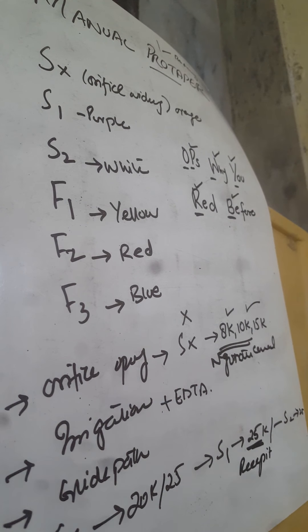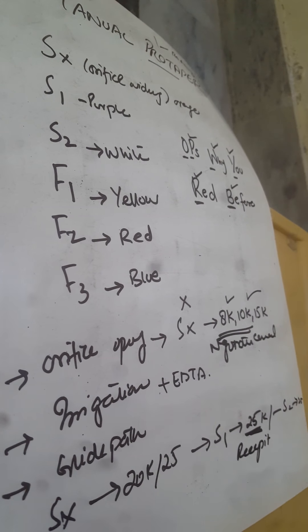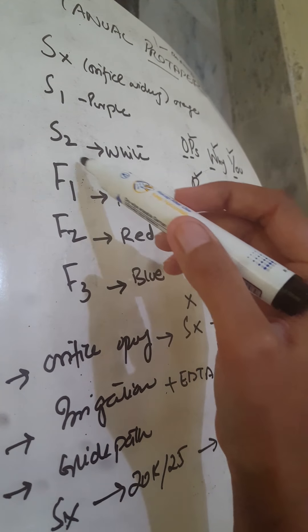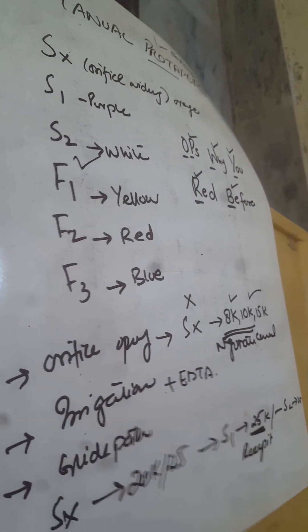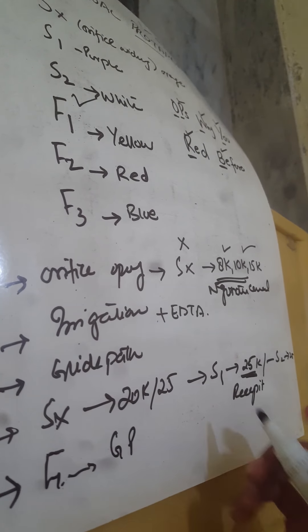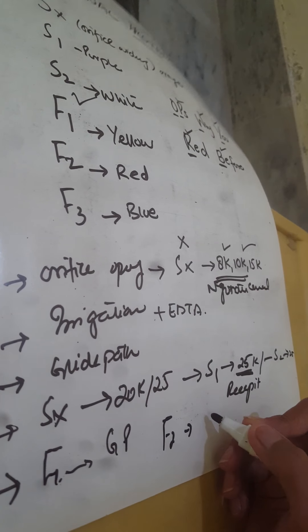After this, if we have done the finishing of the canal till f1, we use the GP of f1. If we use the finishing till f2, we'll use the GP of f2.